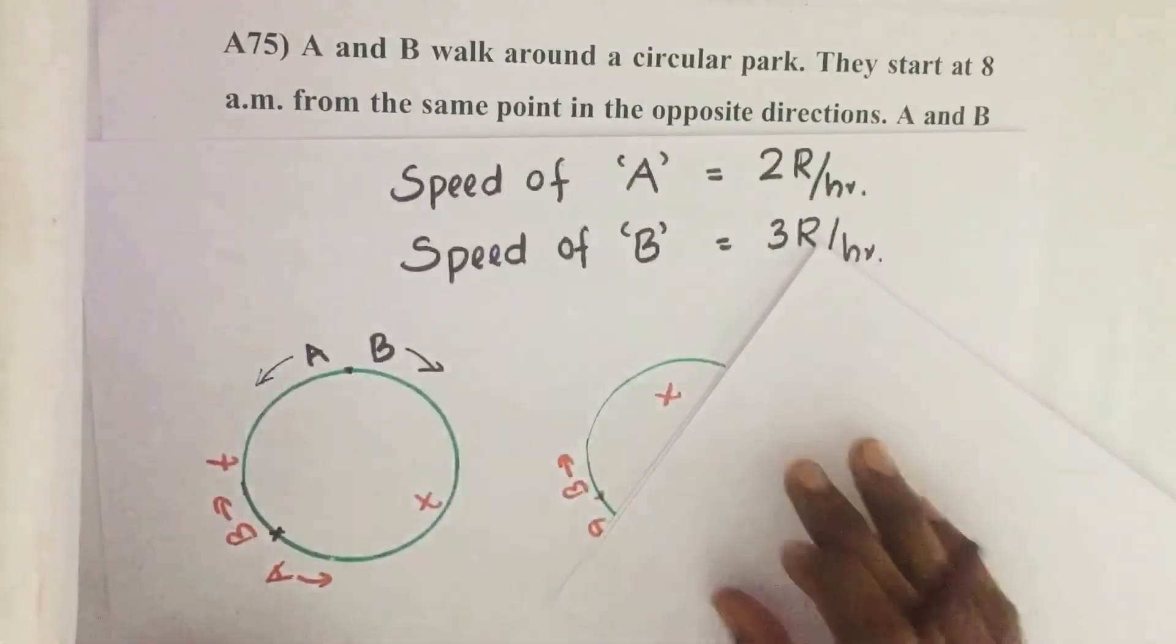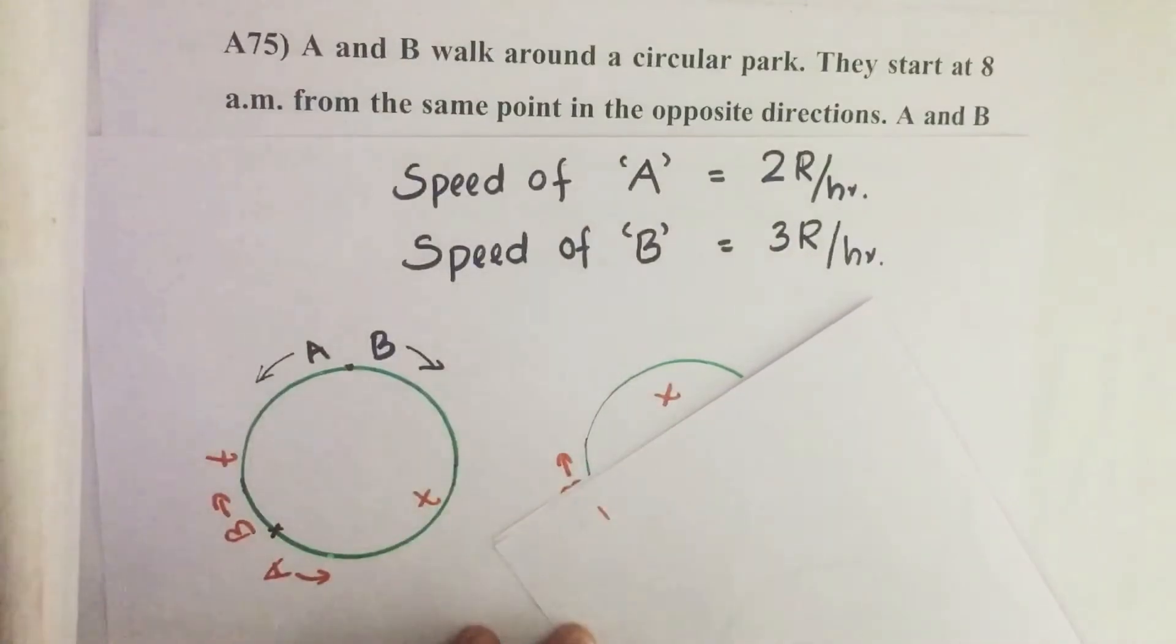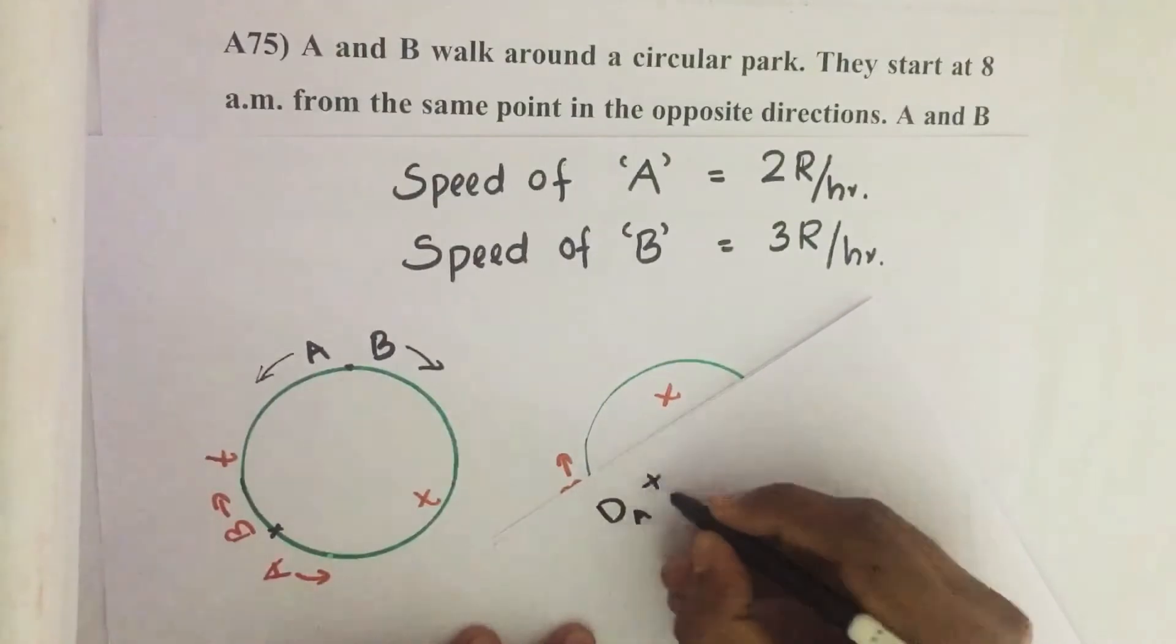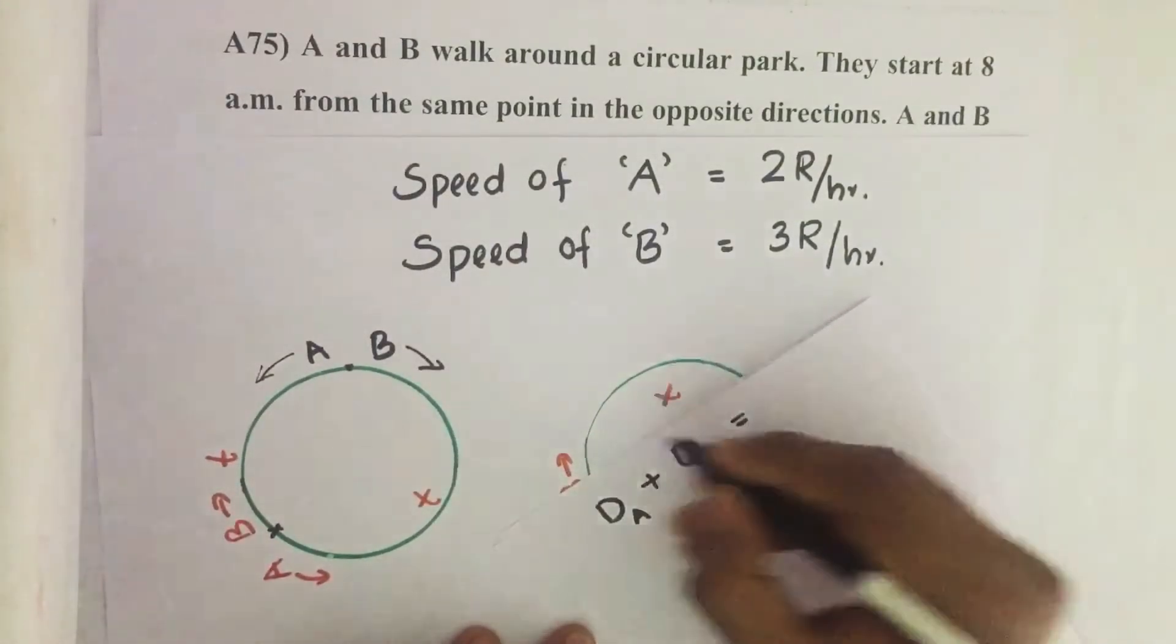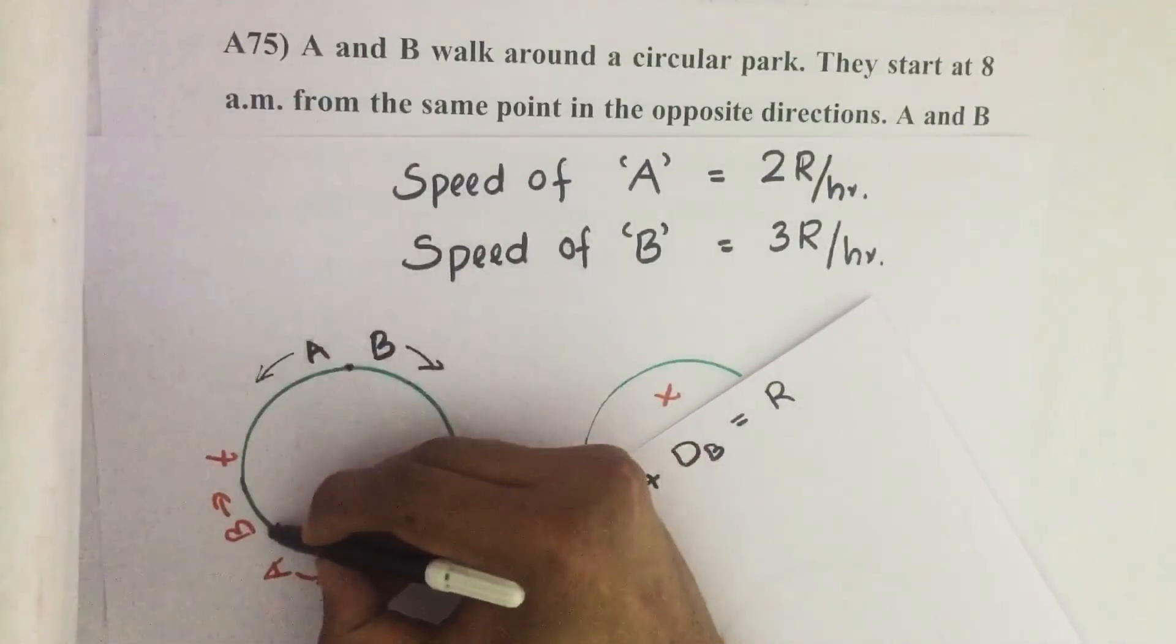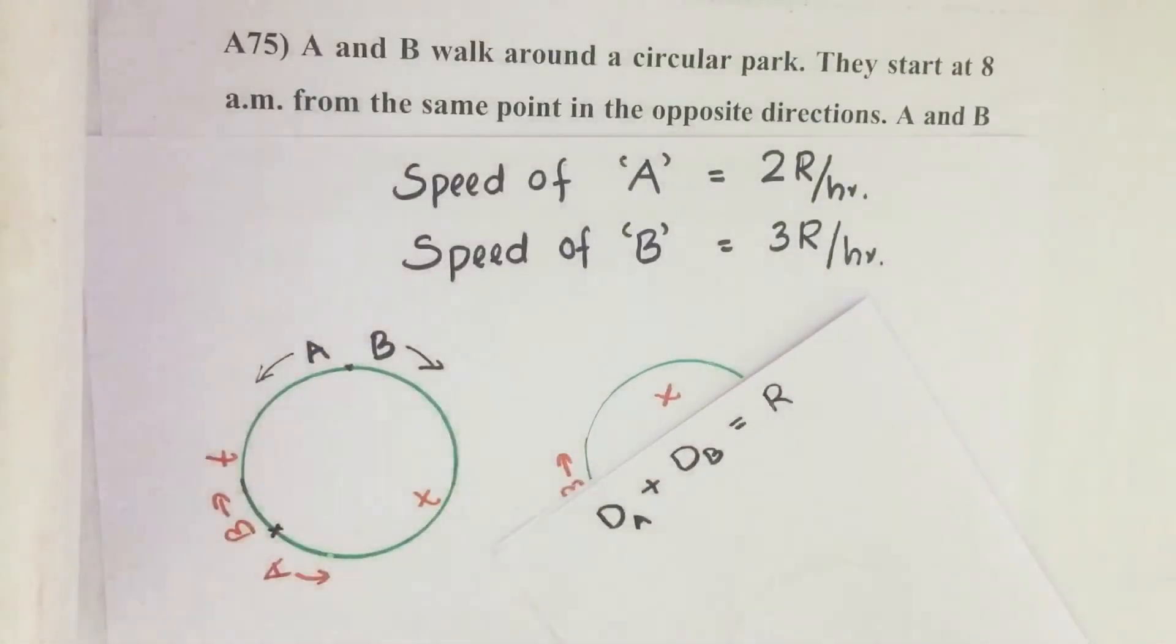So here we know distance travelled by A plus distance travelled by B equals one complete round. A is travelling this distance and B is travelling this distance and we get one complete round.